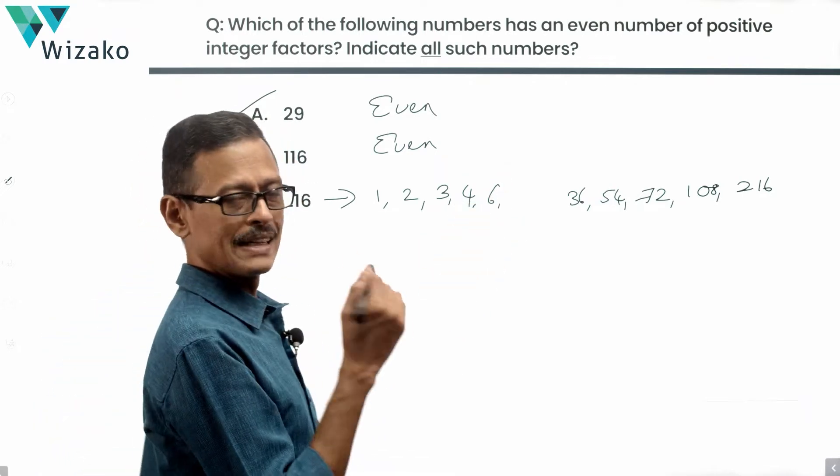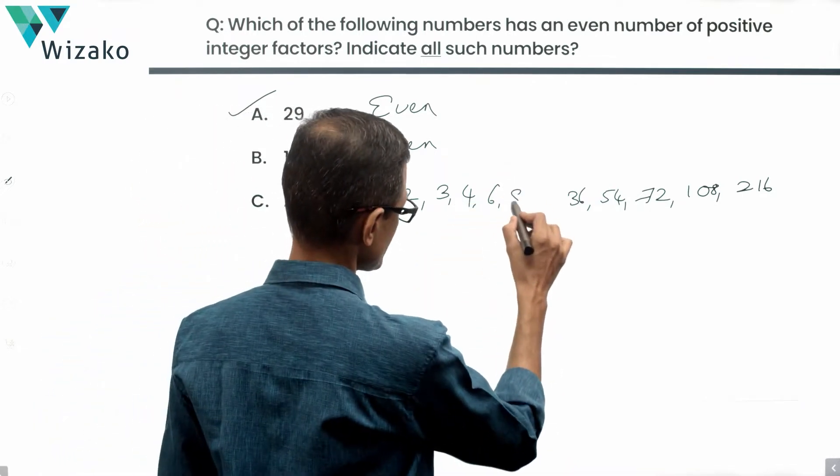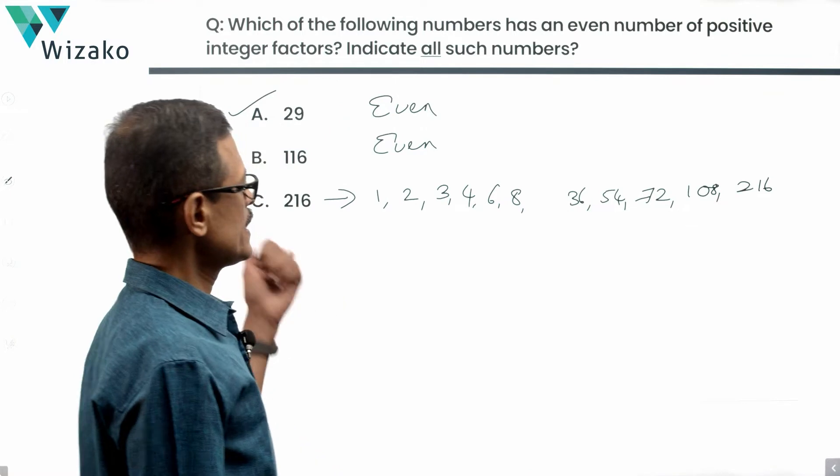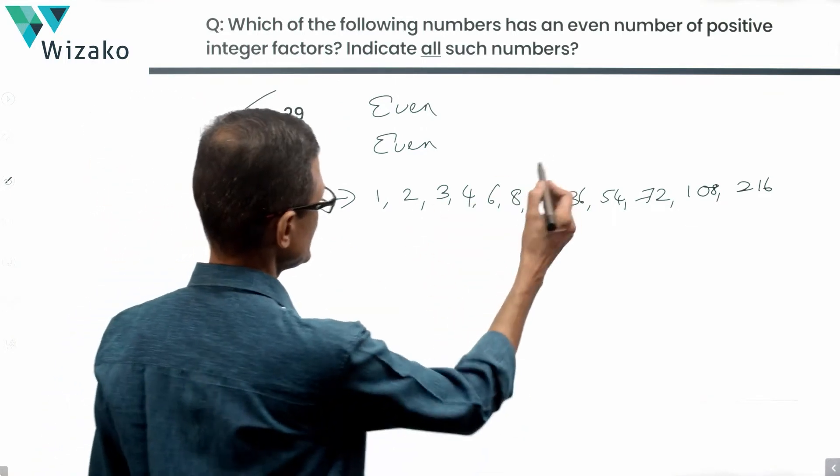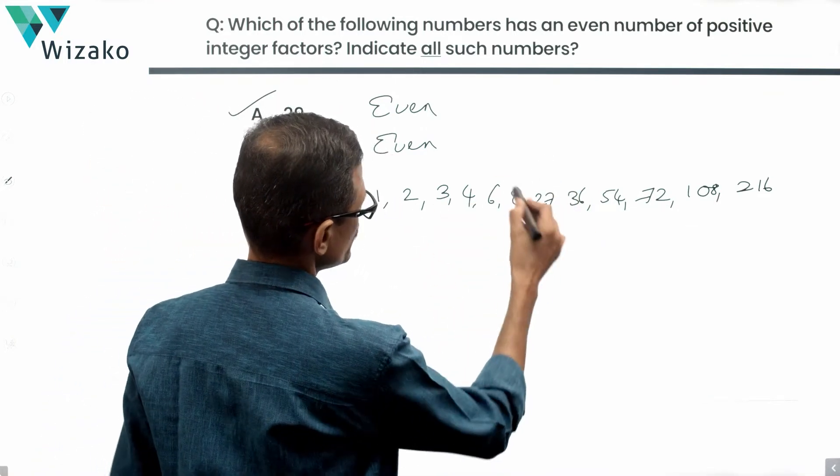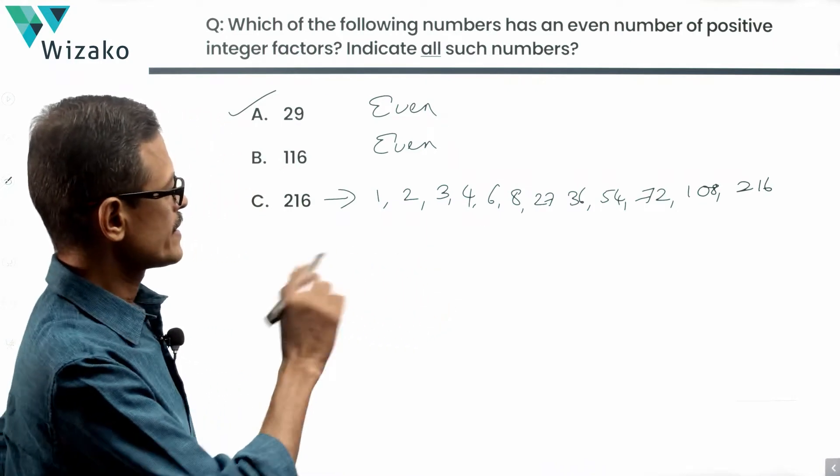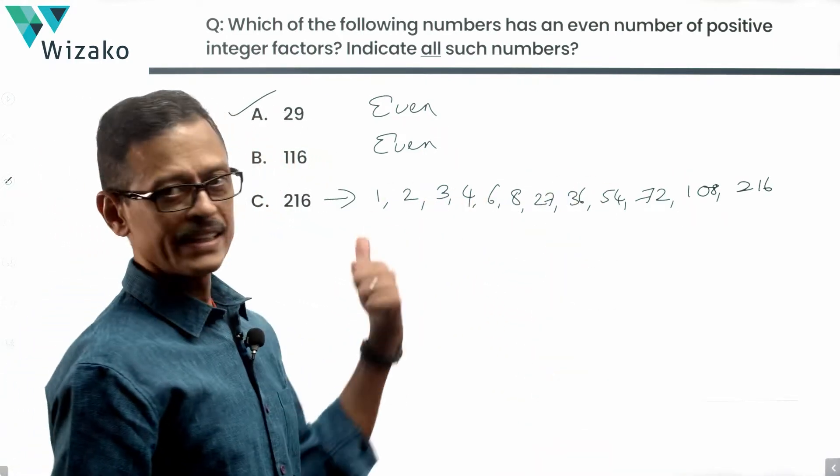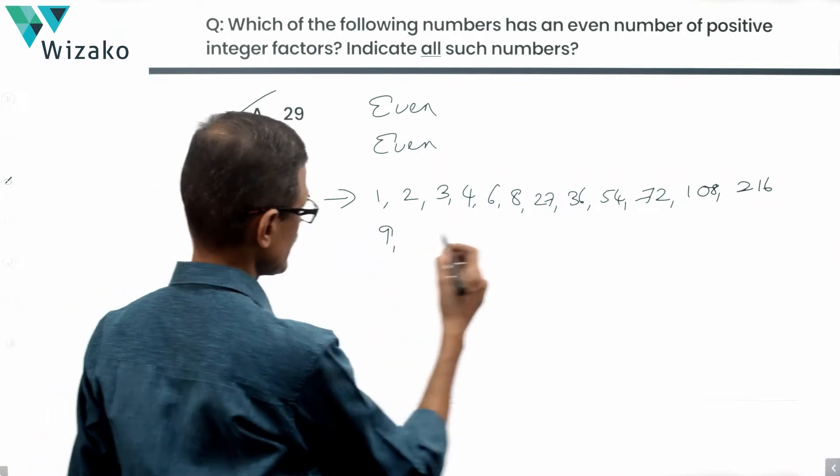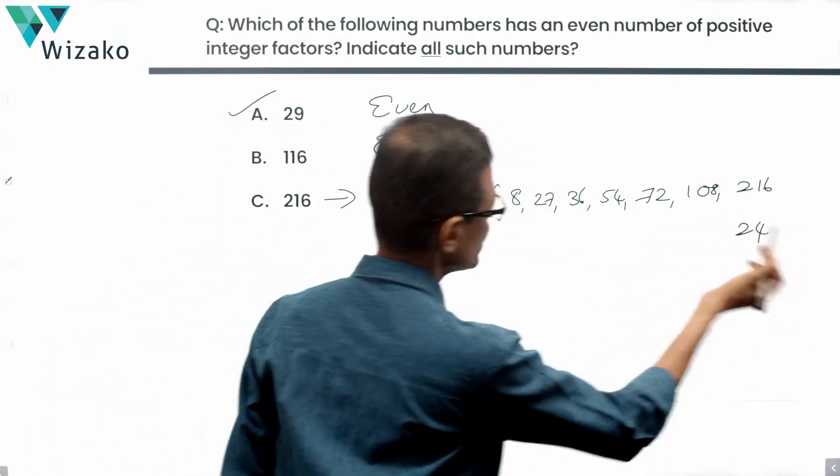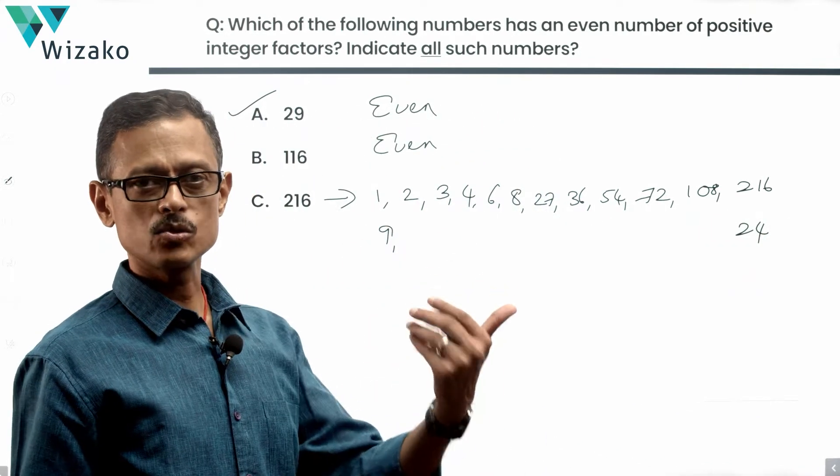Will 7 divide this number? No. Will 8 divide this number? Yes, 8 is going to divide this number. 8 into 27 is what we have. 25 into 8 is 200, 2 into 8 is 16. So this basically, till this, it's not over. Will 9 divide this number? Yes, 9 will divide. So correspondingly, you're going to have 24. 24 times 9 is 216.